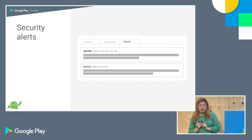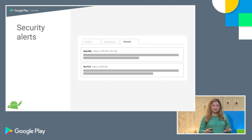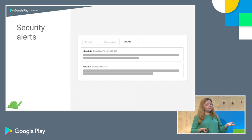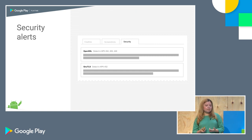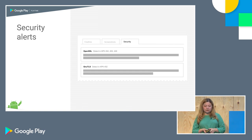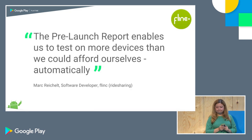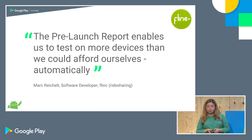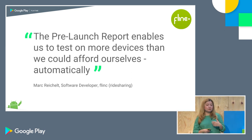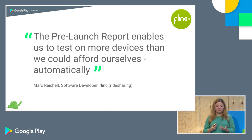We also share security alerts about APKs you've uploaded. It does happen sometimes by mistake, and it also happens when you pull in a third-party SDK — like ads or analytics libraries — which sometimes come with security vulnerabilities. You want to find out about this sooner rather than later. Flink shared that the pre-launch report helps them test on way more devices than they could afford to do manually.